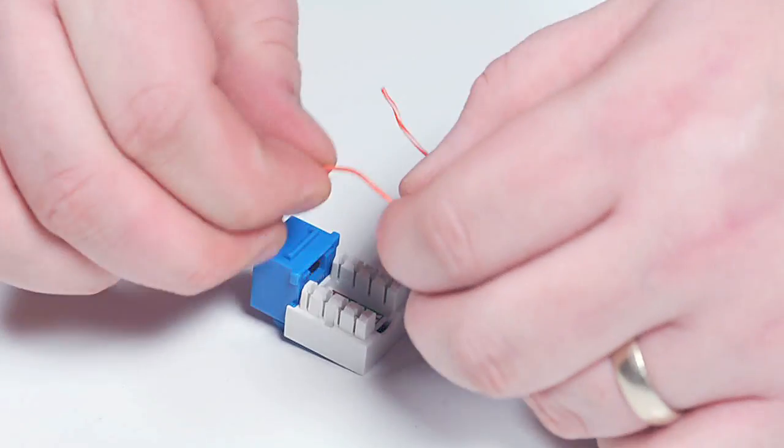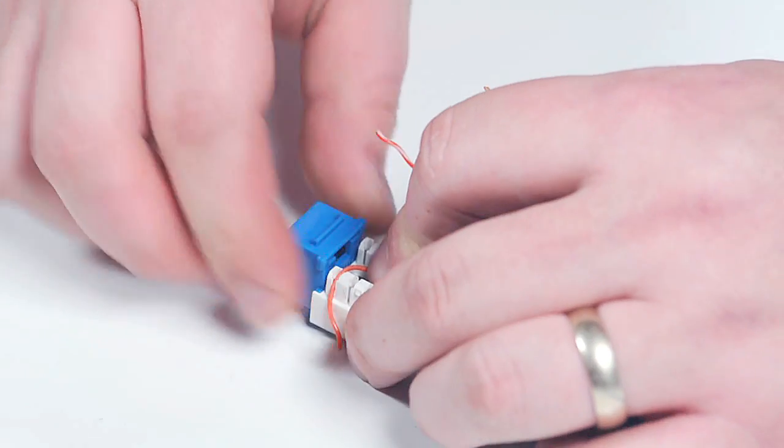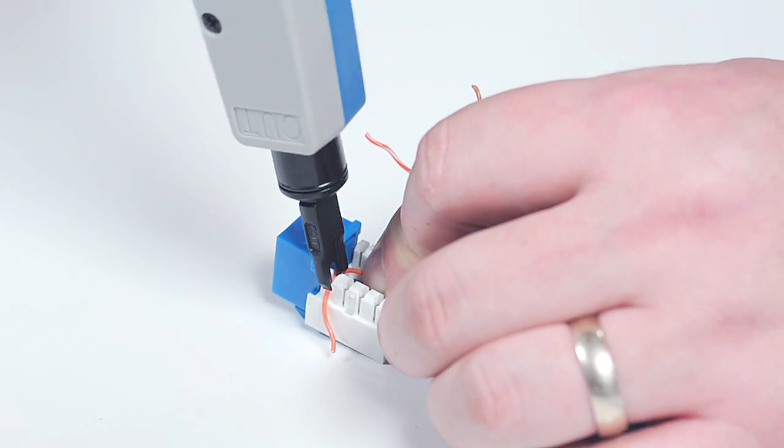Once you have the pairs fanned out, lay them on the IDC connector on the back of the jack in the appropriate color code. The color code is printed on the jack for reference.